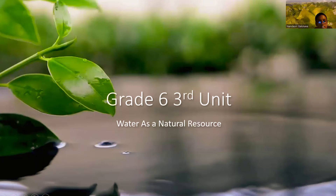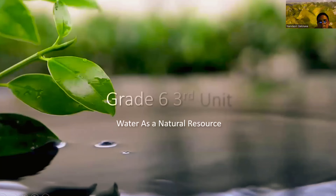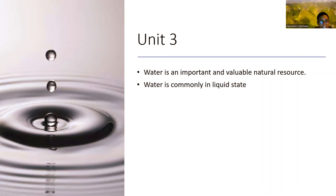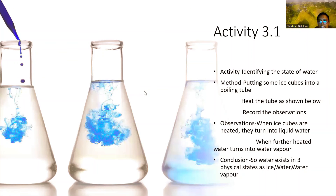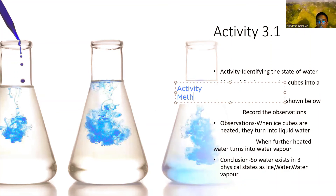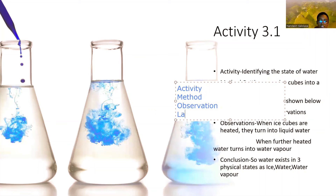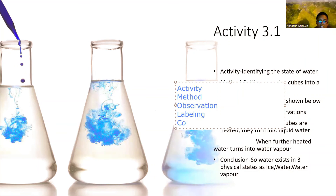First, we covered the specific properties of solids: hardness, malleability, ductility, elasticity, brittleness, texture, and transparent. Next, we discussed the third unit — some key points and an activity. When writing an activity, the main components are: aim, method, observation, labeling, and conclusion.